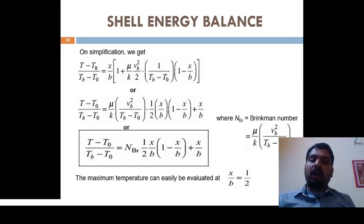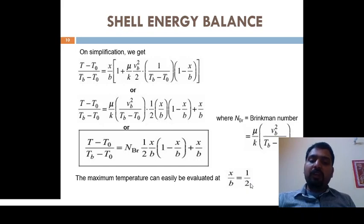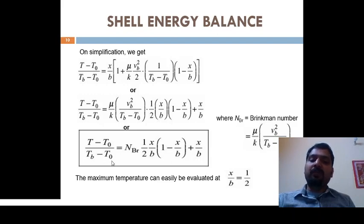The maximum value of temperature is calculated at x/b = 1/2. At this point the temperature profile is maximum, denoted as (Tmax − T0)/(Tb − T0).